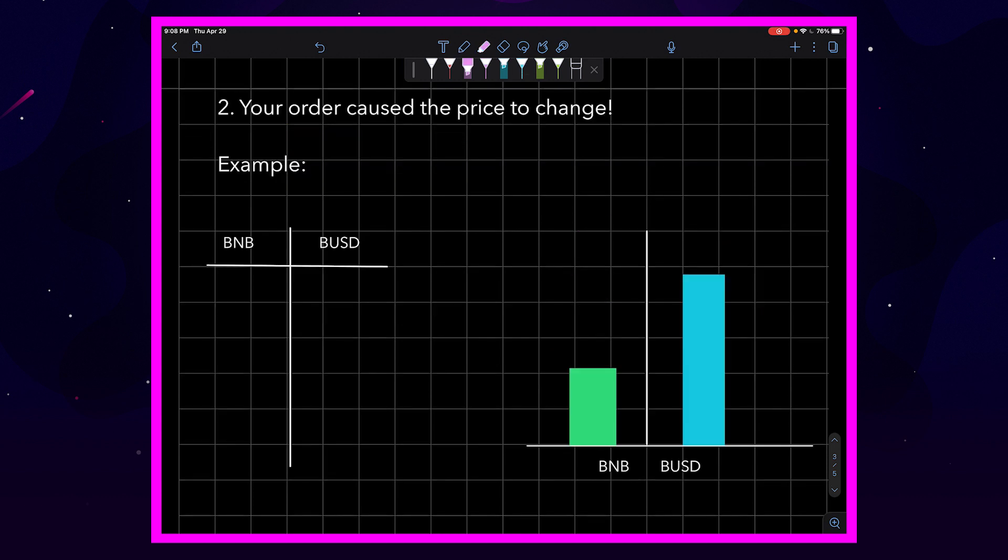The next way that slippage is caused is because your own order caused the price to change. Now, before I jump into this one with an example, I will warn you guys that some of the math, the mathematics that I'm going to use in this example might not be totally 100% accurate, and that's because the purpose of this example is to explain to you the concept behind slippage and not necessarily how to calculate slippage mathematically.